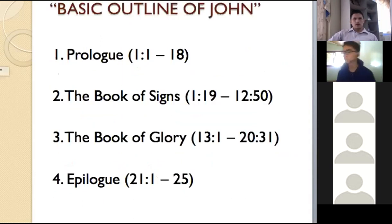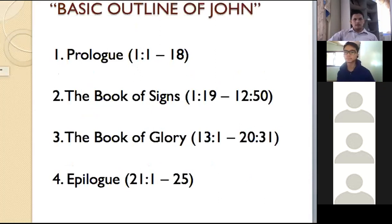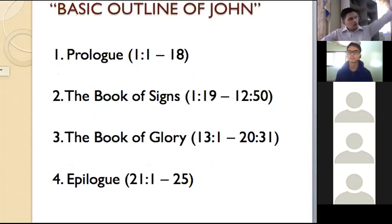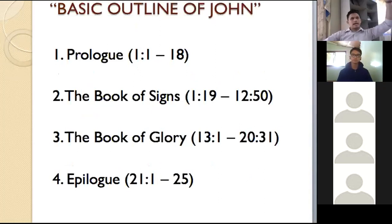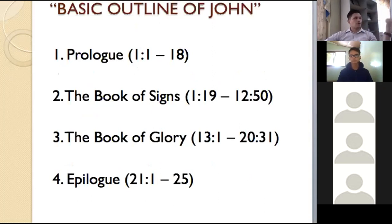The basic outline of the book of John: you have the prologue, the book of signs, the book of glory, and the epilogue. So you have four parts — the prologue or introduction, the book of signs, glory, and epilogue. It's very easy to follow.